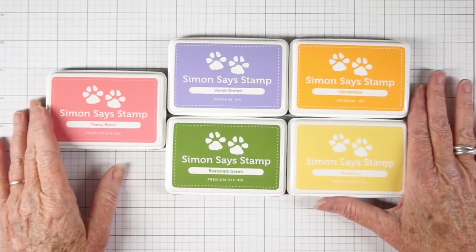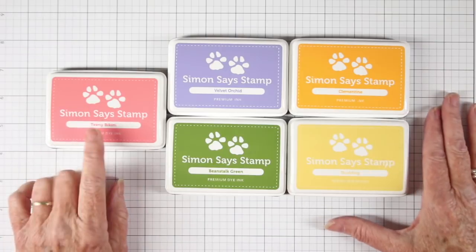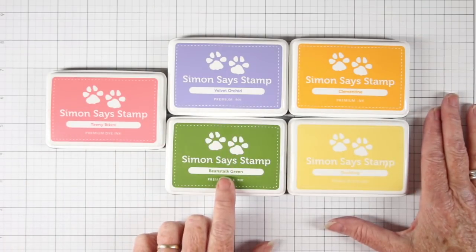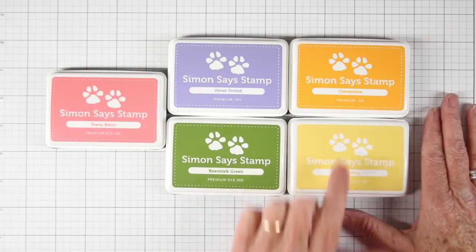For my card I have chosen some classic spring colors and they are Teenie Bikini, Velvet Orchid, Beanstalk Green, Clementine, and Duckling.